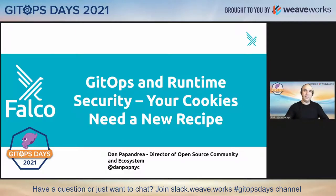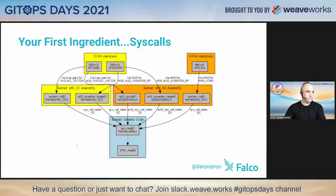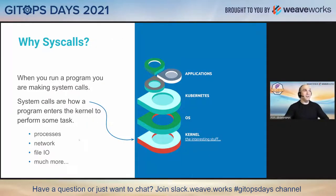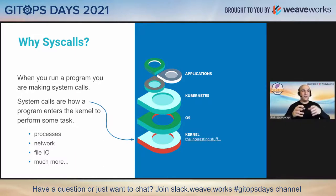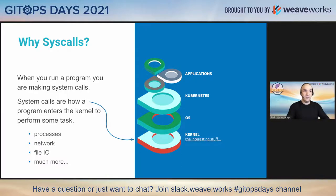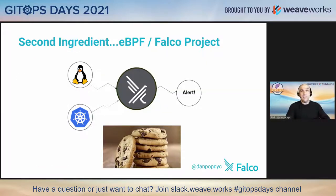I work on a project called Falco, which is a runtime security tool. When you're baking cookies — and also talking about runtime security — your first ingredient is syscalls. When you run a program, you are making system calls. If your program is entering the kernel to perform a task like processes, network, or file I/O, those things are touching the kernel, and that's what system calls do.